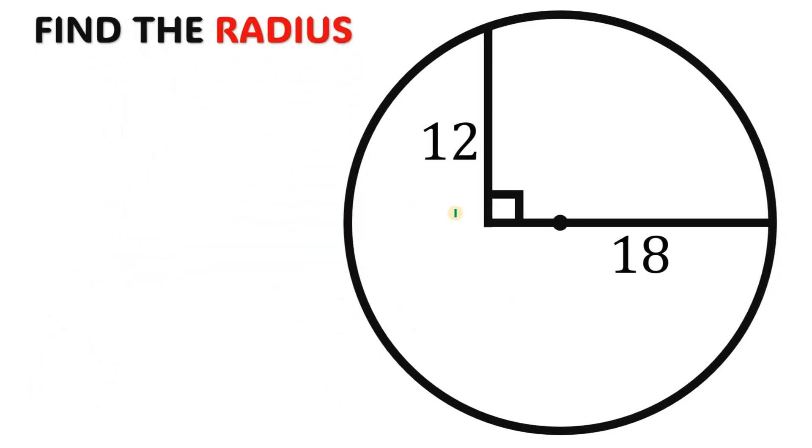Alright, so given this figure, the goal is to find the radius of the circle. Since we want the radius, let's draw the radius like this and call this r. Now from here, take note that this length is also radius, so this is also equivalent to r.